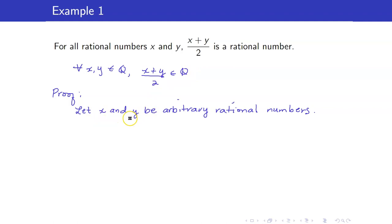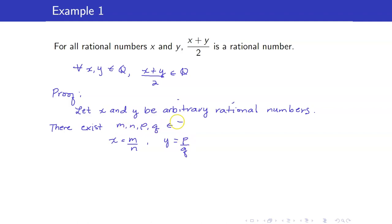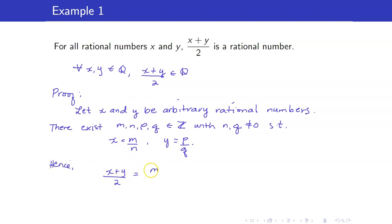Since x and y are rational numbers, there exist integers m, n, p, q with n and q being non-zero, such that x = m/n and y = p/q. Do not forget the condition that the denominator should be non-zero. We now plug these values into (x + y)/2. We get (x + y)/2 = (m/n + p/q)/2, which equals (mq + np)/(2nq).